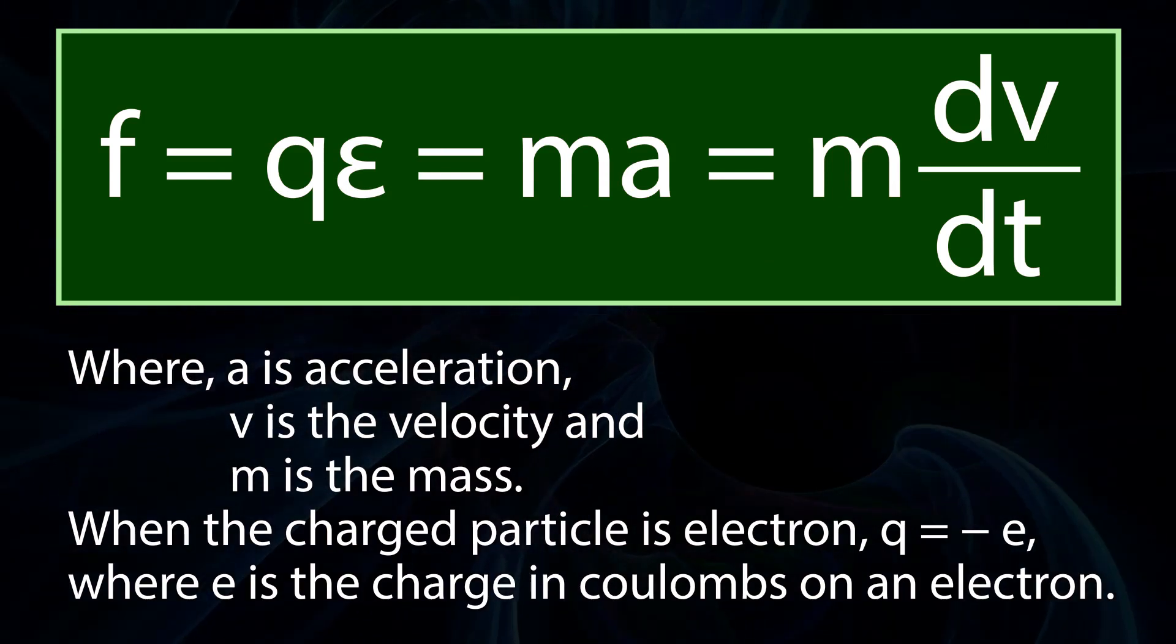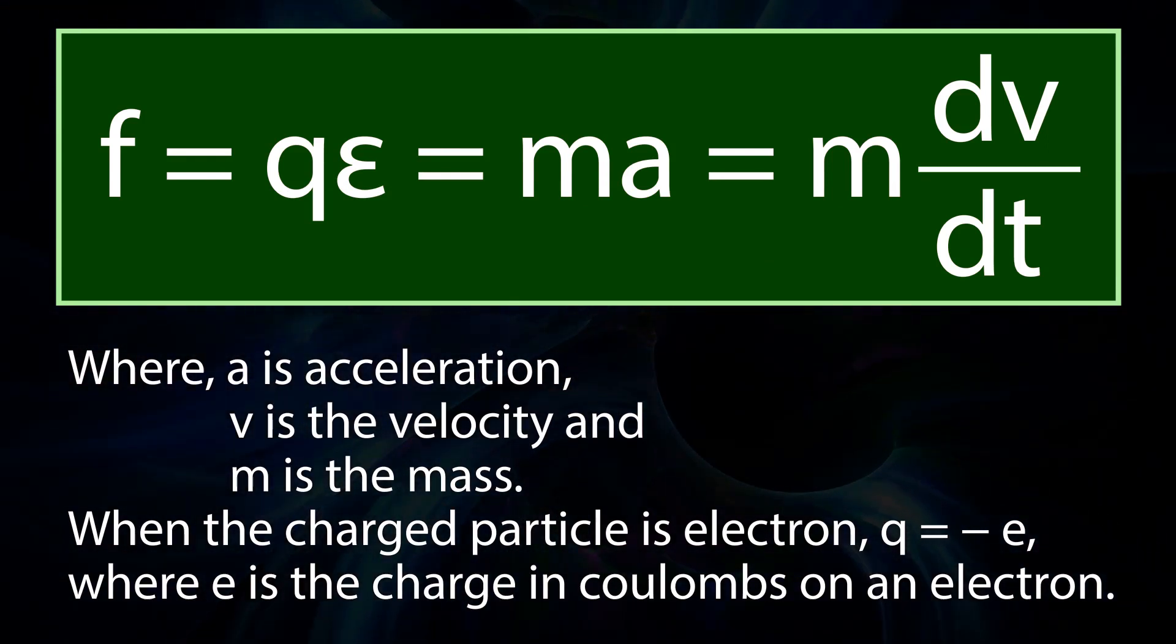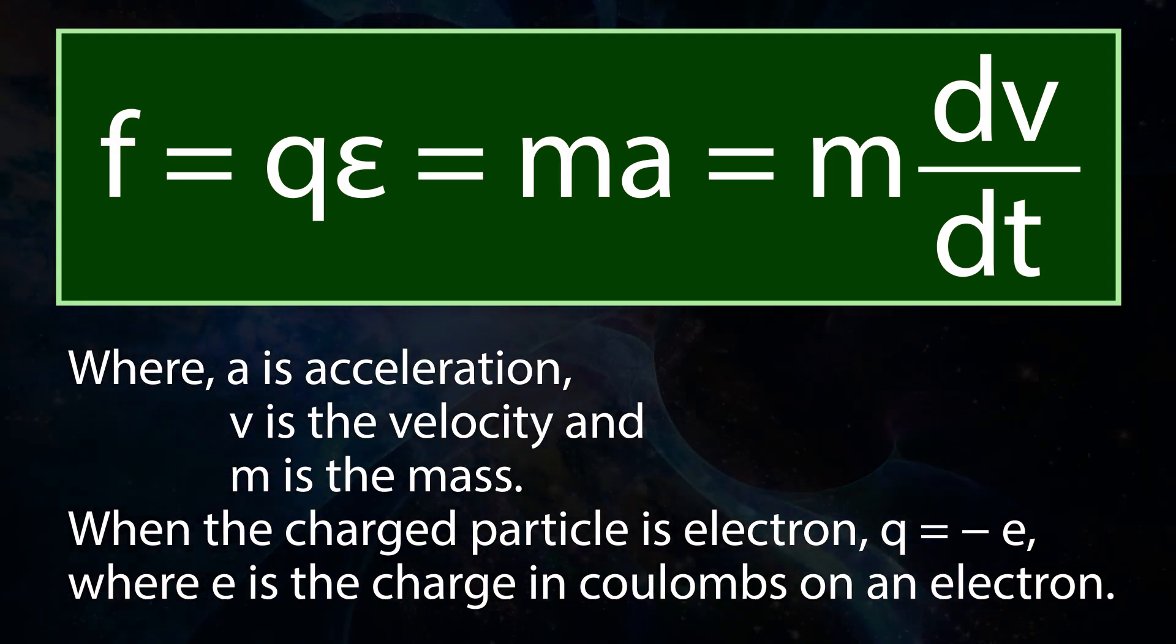When the charged particle is an electron, q equals minus e, where e is the charge in coulombs on the electron.